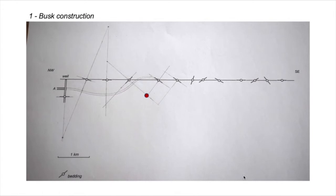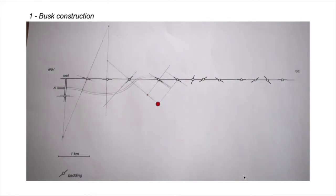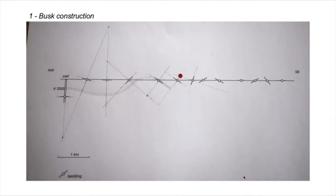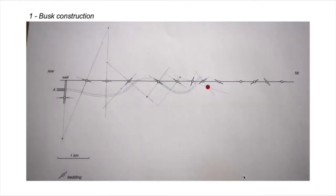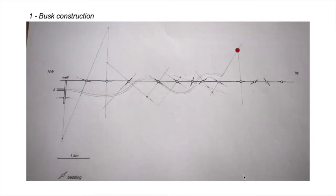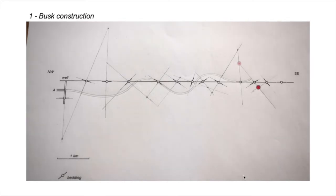The next bed trace we're going to use is parallel to the one we've just used, so we just move that point down continuing our bed trace as a straight pair of lines. We can then construct the next arc rotation point and put an arc segment in, another rotation point and arc segment, the next rotation point and another arc segment, another rotation point where our lines perpendicular to the bedding traces intersect, and the arc segments continuing from there — finishing with our last center of rotation and the arc segment.